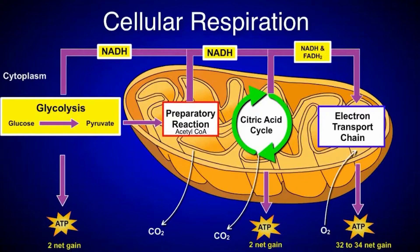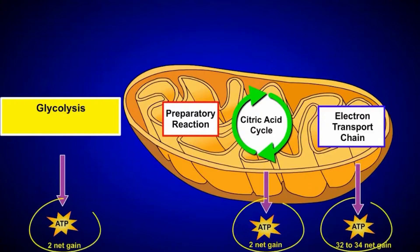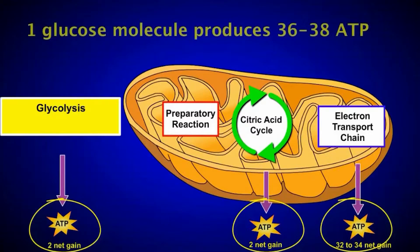Oxygen is used by the ETC as an electron acceptor; it then combines with hydrogen ions to produce water. If we add all the ATP produced by just one glucose molecule, we can see that this reaction produces 36 to 38 ATP.